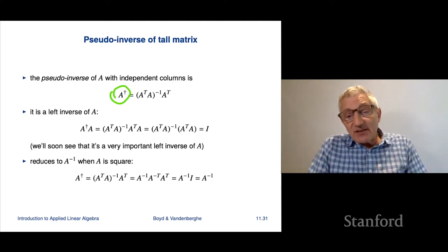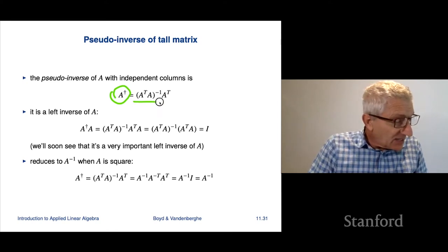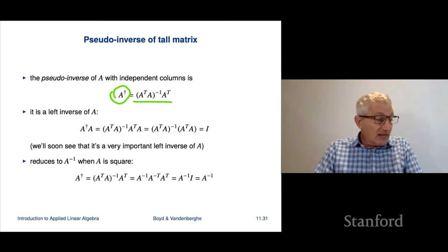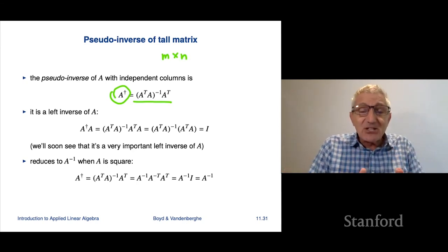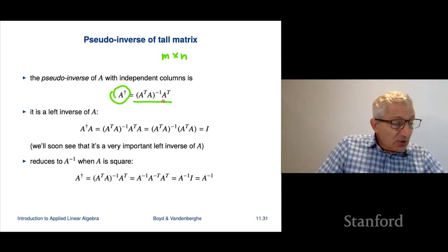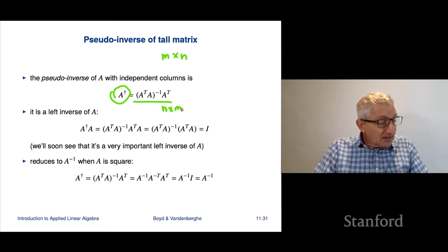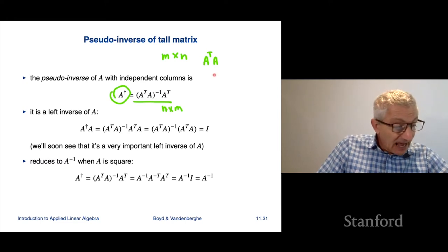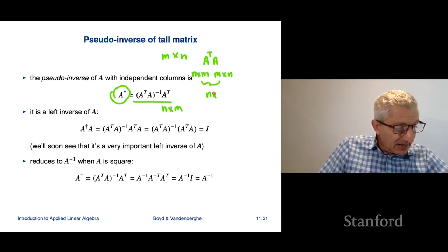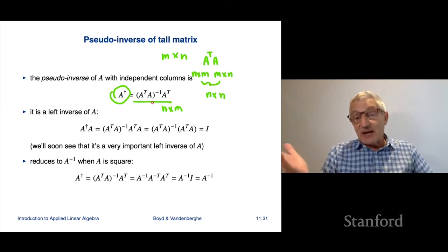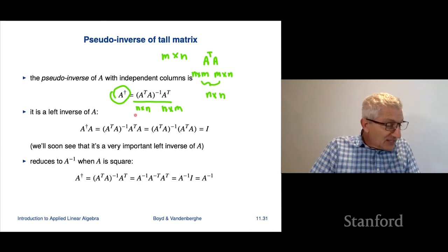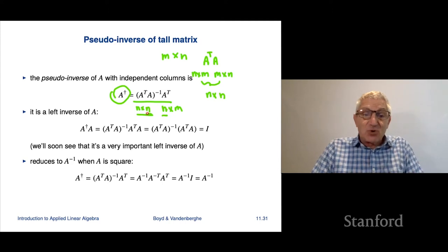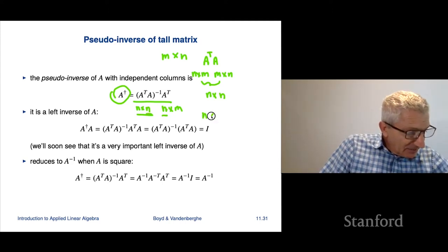Here's the formula: A dagger equals (A transpose A) inverse times A transpose. Let's do a quick syntax check. Let A be m by n. A transpose is n by m. A transpose A is n by n — that's the Gram matrix. The inverse of an n by n matrix is n by n. Multiplying (A transpose A) inverse, which is n by n, by A transpose, which is n by m, gives an n by m result. So A dagger is an n by m matrix — it has the transpose dimensions.